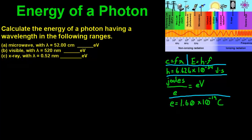Hi guys. Today we're talking about energy of a photon. In this problem, we are asked to calculate the energy of a photon having a wavelength in the following ranges: microwave with 0.52 meters or 52 centimeters, 520 nanometers, and 0.52 nanometers.